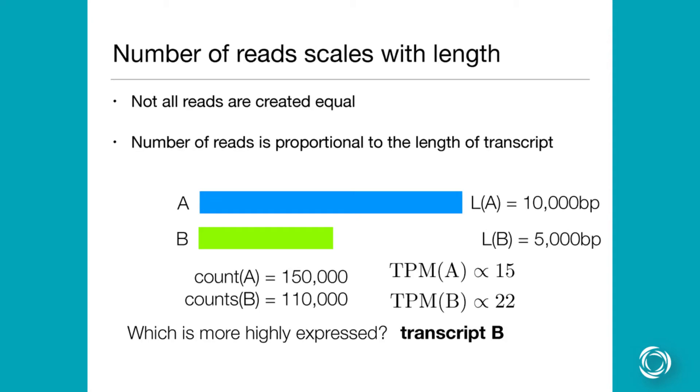So is anyone not familiar with the length bias in RNA-seq? Okay, so I'll go through this really quickly then. Yeah, so not all reads are created equal, right? So the number of reads is proportional to the length of a transcript. So if you have two different transcripts that are of different lengths,